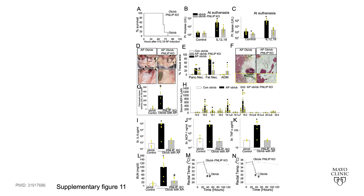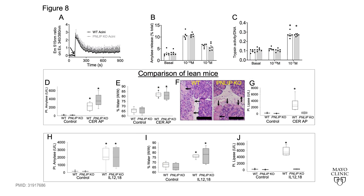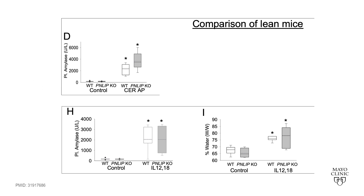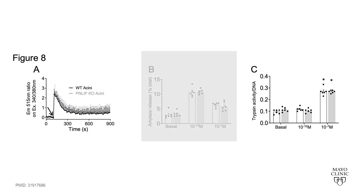In Figure 8, we verify that the protection by PNLIP deletion is specifically from severe inflammation and developing organ failure during pancreatitis, and that this deletion does not protect from inducing pancreatitis itself, since the signaling induced by cerulean is not affected in PNLIP knockout mice.